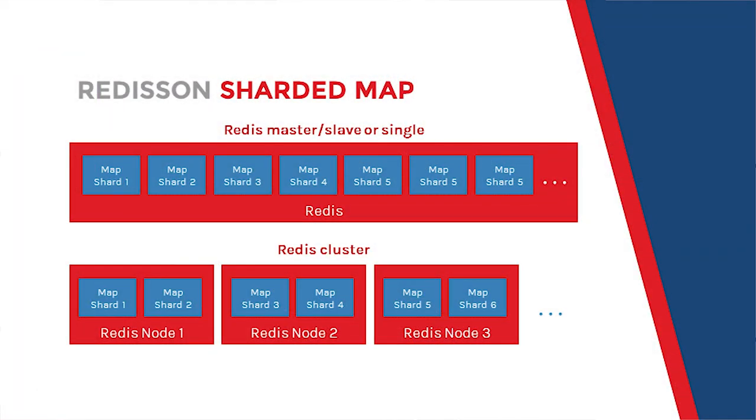Another map implementation available in Redisson is a sharded map. Here is the internal structure of a sharded map. This map is split into several shards. And if Redisson is connected to a Redis cluster and each Redis node has an equal amount of slots, it will get approximately equal amount of map shards.